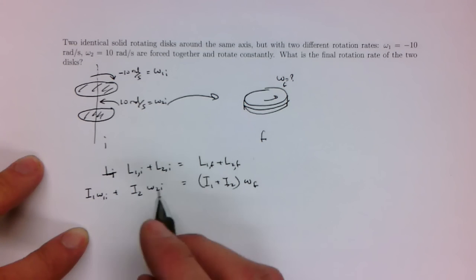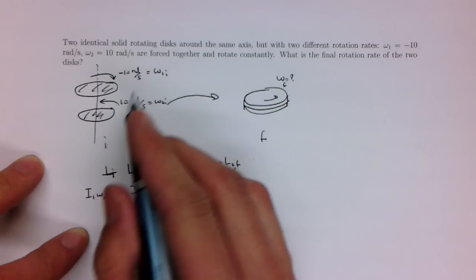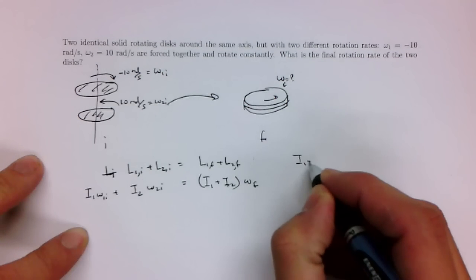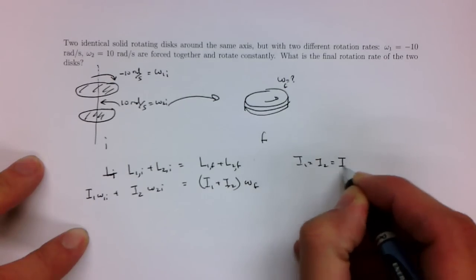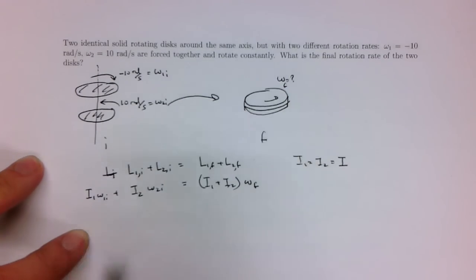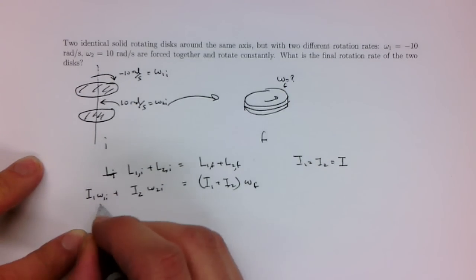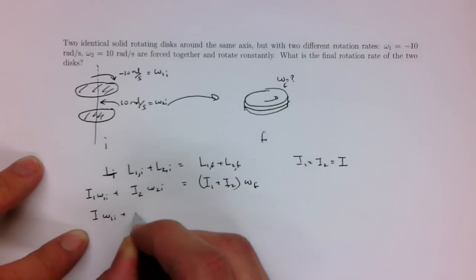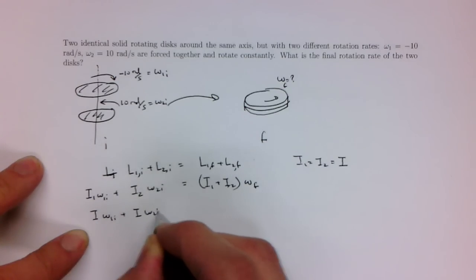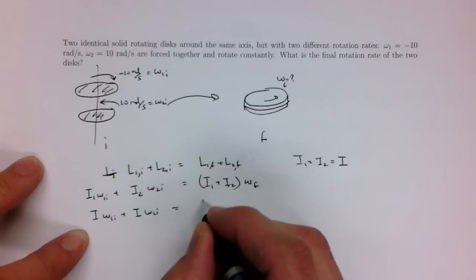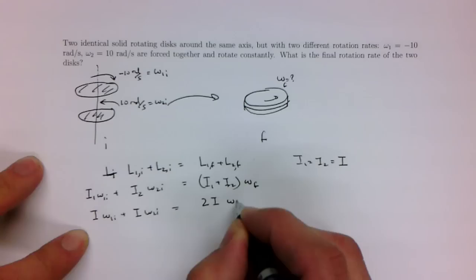This is the combination of the two, but because they are identical, I1 is equal to I2, which we shall just call I for now. So, this is going to be I of omega 1 initial plus I of omega 2 initial is equal to 2I omega final.